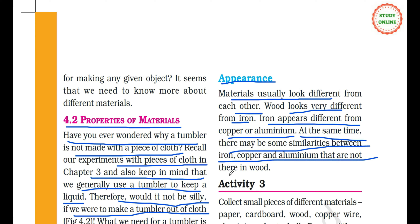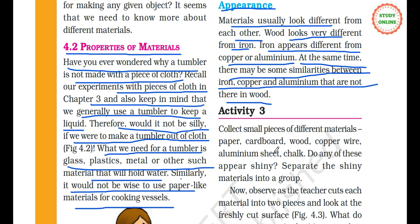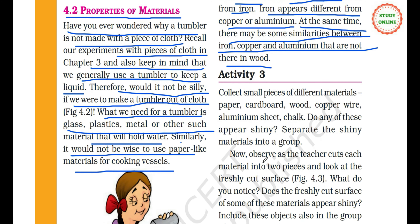At the same time, there may be some similarities between iron, copper and aluminium that are not there in wood. For example, iron is also hard, copper is also hard, aluminium is also hard. Additionally, all three can be beaten thin — copper can be made thinner than iron. So there are many differences within materials in terms of their shining and other properties.